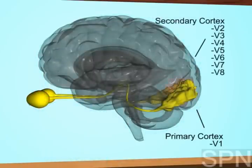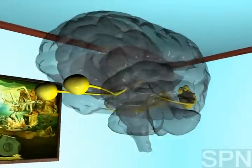The secondary visual cortex, which comprises V2, V3, V4, V5, V6, V7 and V8 regions, depends on the V1 region.